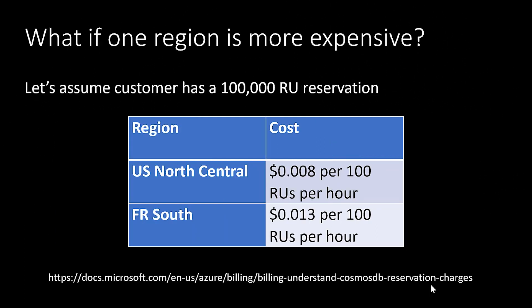Now we'll explore the example where one region is more expensive than another. Let's assume this same customer has a 100,000 RU reservation and they've globally replicated their data to U.S. North Central and France South. U.S. North Central has a RU cost of 0.8 cents per 100 RUs per hour, and France South has an RU cost of 1.3 cents per 100 RUs per hour — making France South about 1.6 times more expensive than U.S. North Central. At the link shown here, you'll be able to see what we call the reservation charge ratios for each Azure region, which are based on the cost for RUs per hour in each region. To calculate how the RUs from your reserve capacity reservation are applied to these regions, take the number of RUs and divide it by this ratio to calculate the number of RUs that will be applied from this reservation.